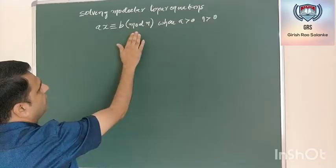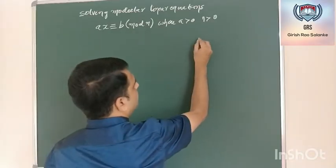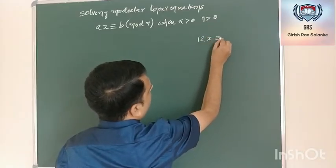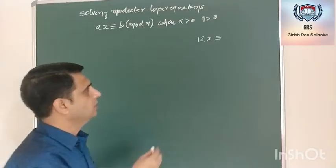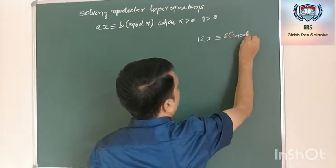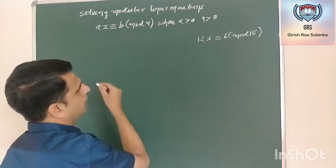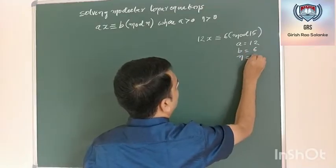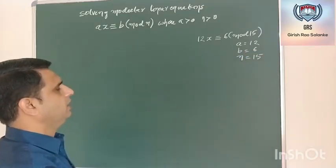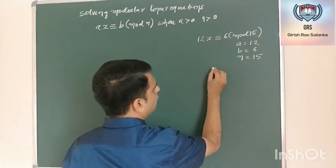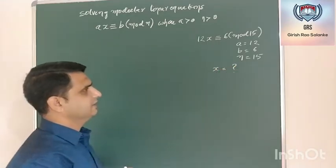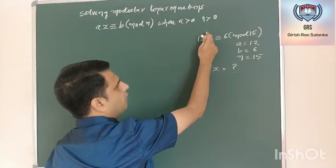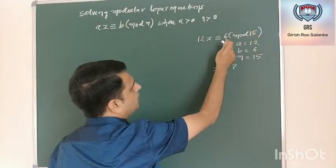What do we mean by this linear equation? Assume that there is a modular linear equation denoted with 12x equivalent to 6 mod 15. In this case, what is the value of A? A value is 12, B value is 6, and N value is 15. What we are supposed to find is the value of X. We need to find the value of X such that when we multiply that value of X with 12 and perform a mod operation on 15, it should result in 6.